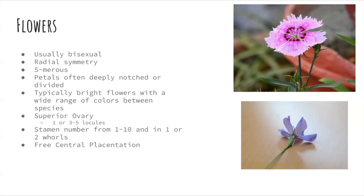In addition, flowers of this family are characterized by deeply notched or divided petals. Flowers are typically bright with a wide range of colors between species. They have a superior ovary of one or three to five locules. The stamen number can vary between one and ten, arranged in one or two whorls, and it typically has free central placentation.